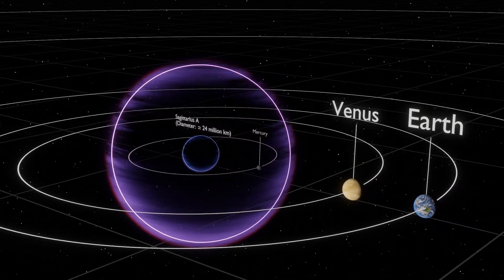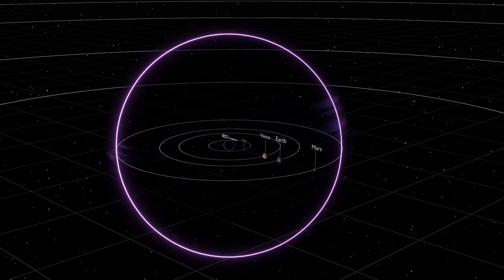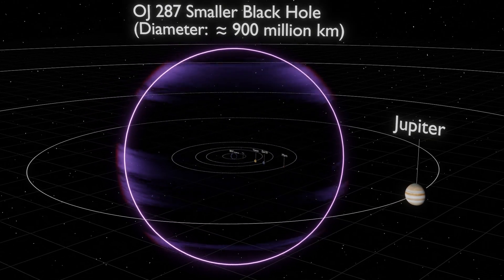OJ 287 smaller black hole is part of a binary black hole system. Its size would put its diameter to stretch out all the way beyond the orbit of Mars.